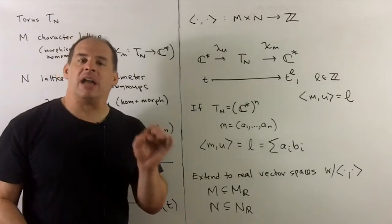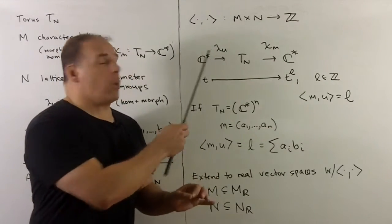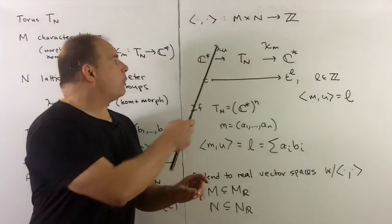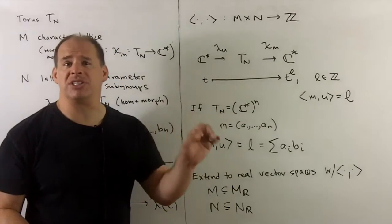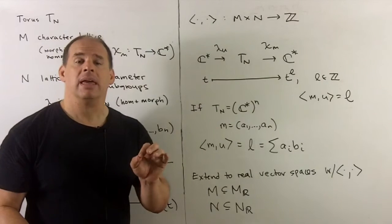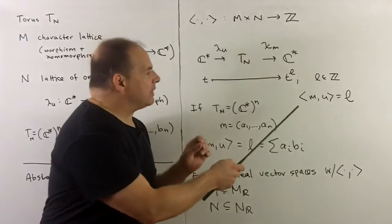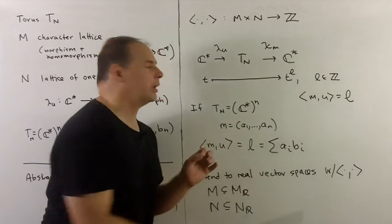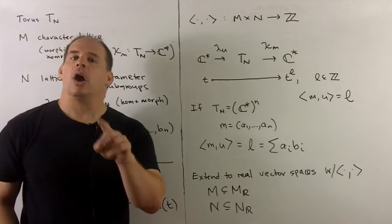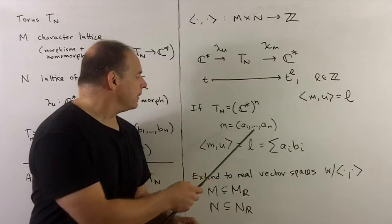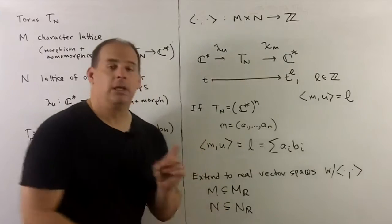M and N admit a non-degenerate bilinear pairing. If we have a one-parameter subgroup and a character, we can compose: the one-parameter subgroup goes from C star to T_n, and the character goes from T_n to C star, giving a map from C star to C star. That's a homomorphism, and we've seen that only happens when we raise to powers. So we take that power, and that's how we define the pairing. Concretely, if T sub n equals C star to the n, we pick our character given by the tuple m equals (a1 through an), and our pairing is just given by the usual dot product between tuples.